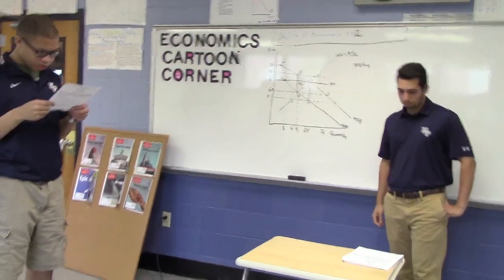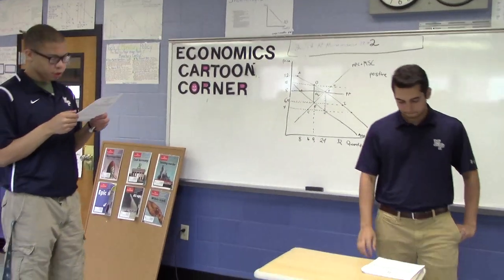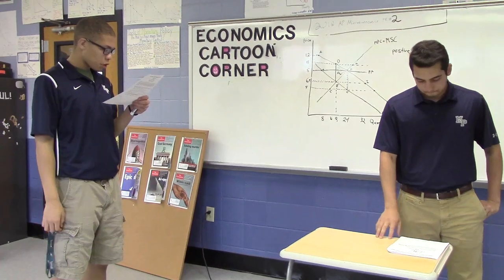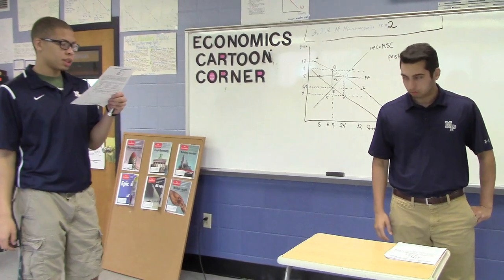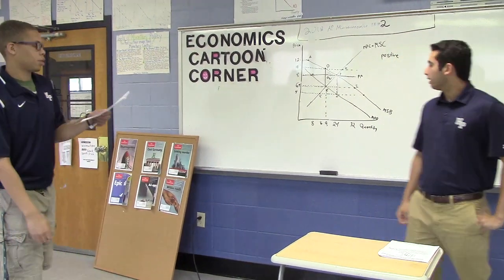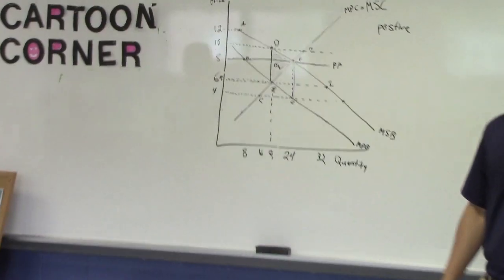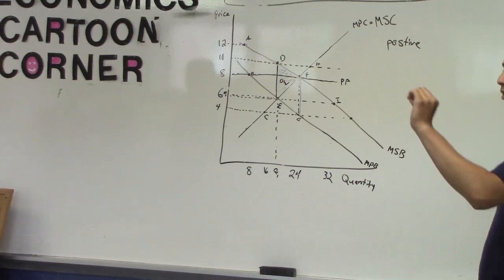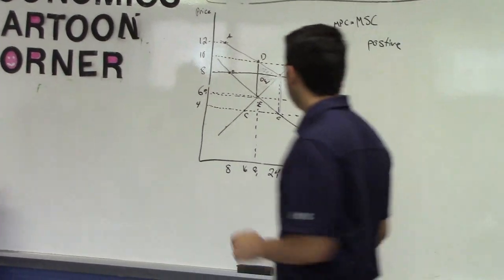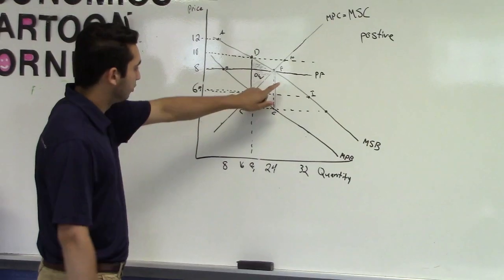Part D. Suppose the government is considering granting a subsidy to correct the market failure. What is the dollar value of the per unit subsidy that would achieve the socially optimal quantity? All right. So the dollar value that would achieve the MSB would be $4. And the reason for this is because, as you see, the MSB is greater than the MPB right there.